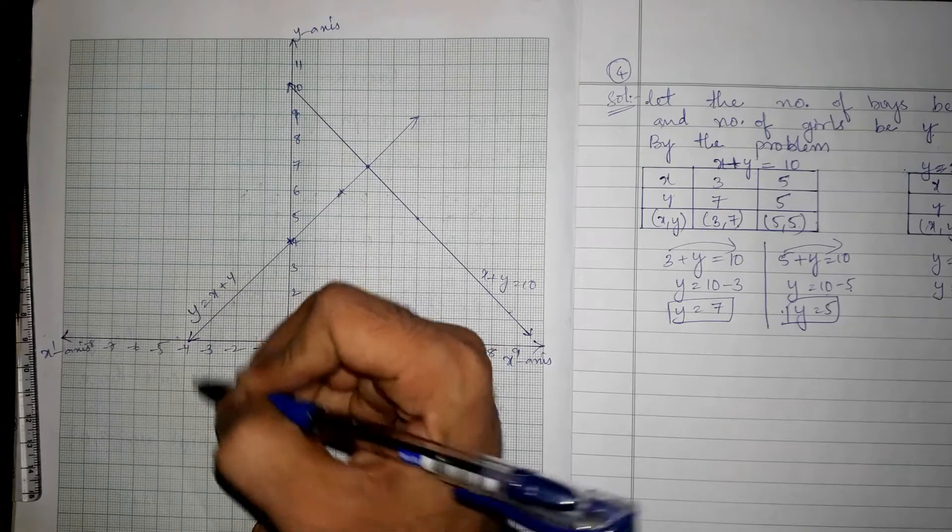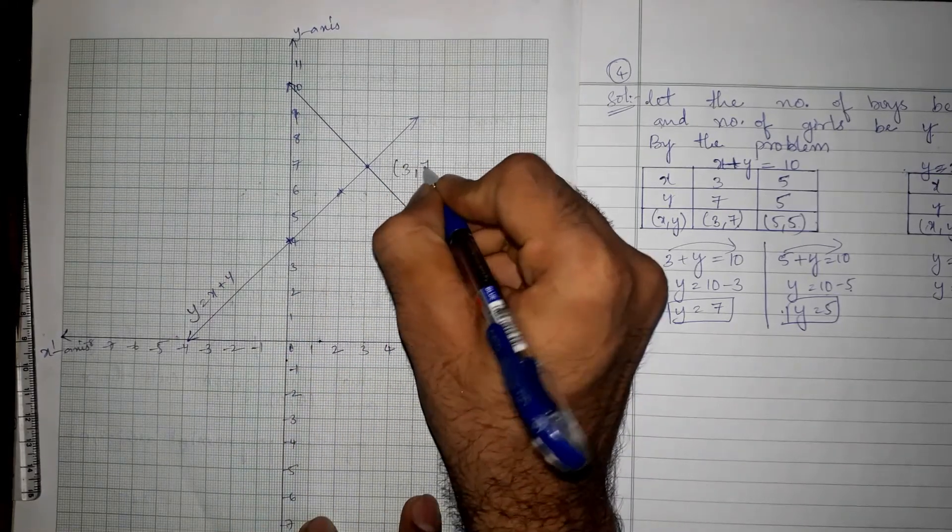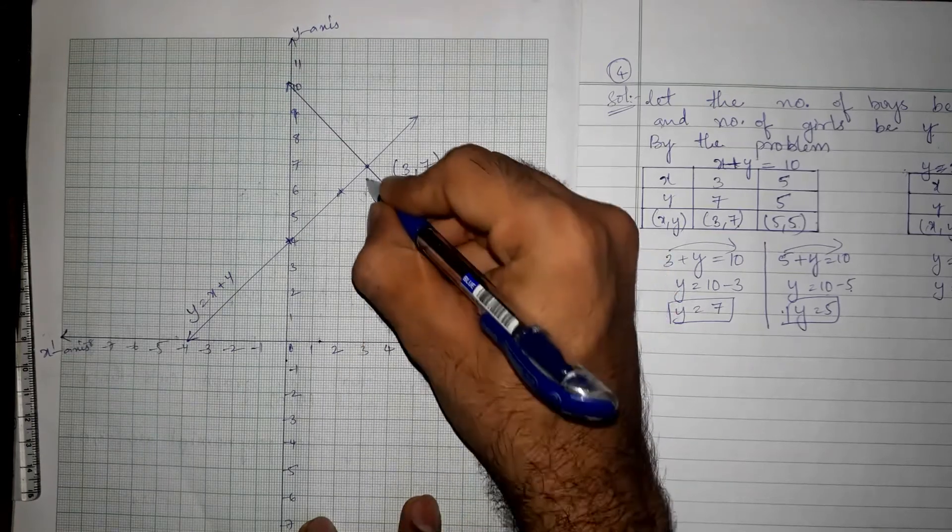And the equation is y is equals to x plus 4. Next, the meeting point is here - 3 comma 7. This is x and y is here - 3 comma 7.